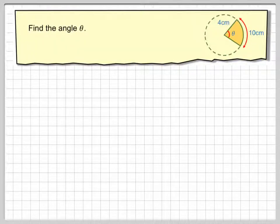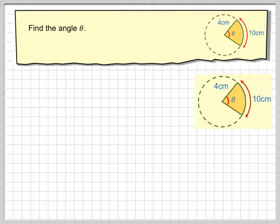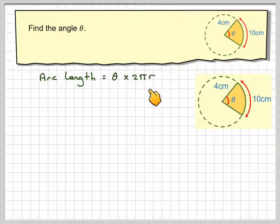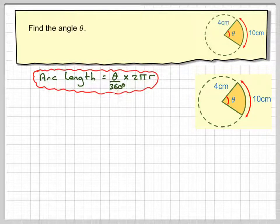Right, in this video we've got arc length and we're going to find the angle subtended at the centre, theta. Okay, so writing down the formula, the arc length is 2 pi r times theta over 360.